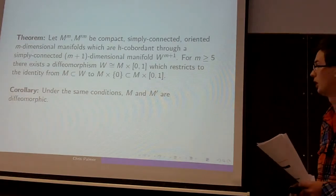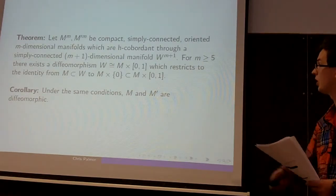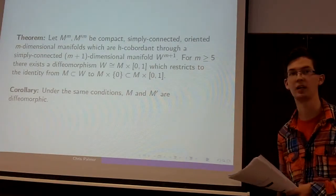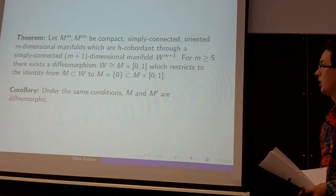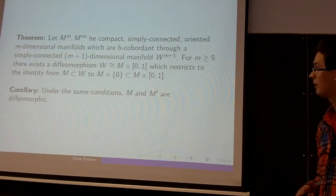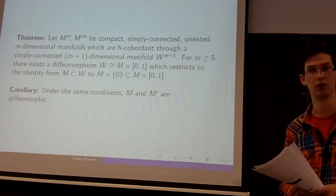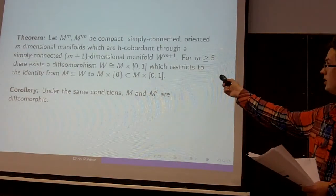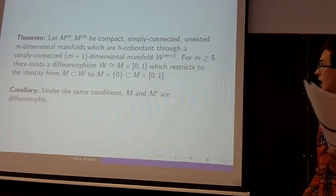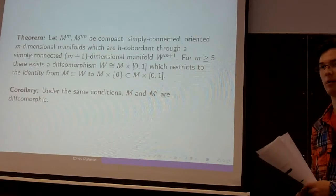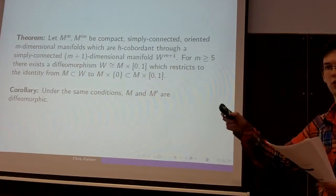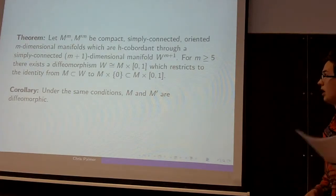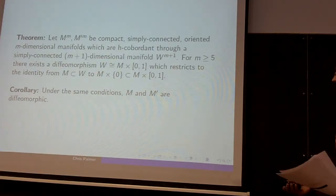And so an immediate corollary from this is: under the conditions of the H-cobordism theorem, M and M' are diffeomorphic, because M is diffeomorphic to M × 0, which is diffeomorphic to M × 1, but when we restrict this ambient diffeomorphism between W and M × [0, 1] to the top boundary component, it gives a diffeomorphism between M' and M × 1.